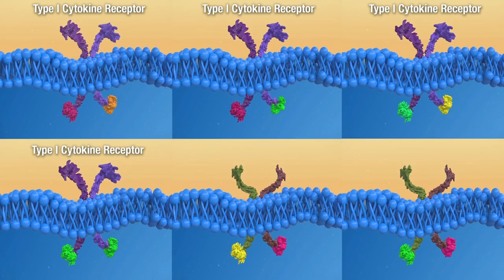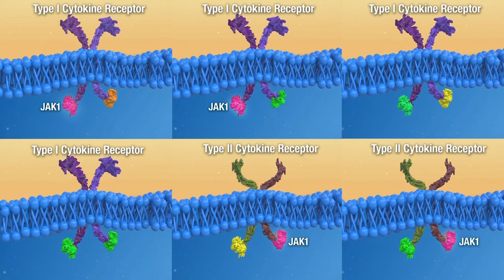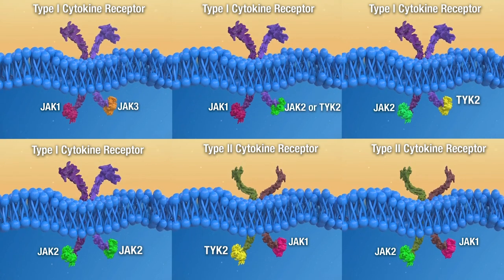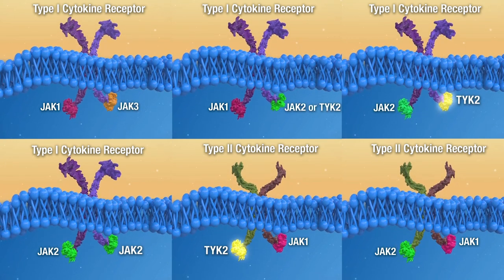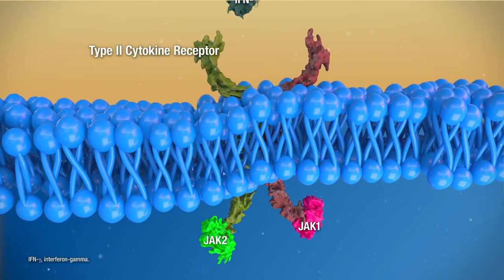Although there is a significant amount of functional overlap among the JAK family members, specific ligand-receptor interactions selectively activate distinct members of the JAK family and subsets of STAT proteins. Some of these signaling pathways contribute to the pathogenesis of RA.